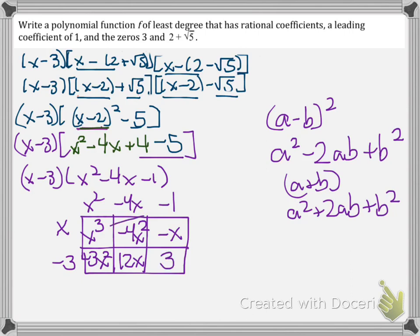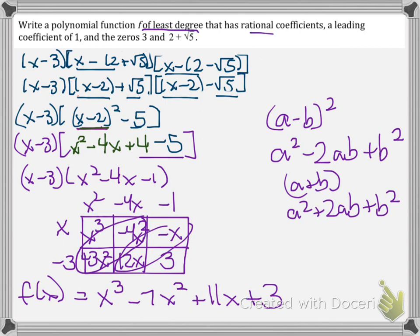And then we combine like terms here. We get x cubed minus 7x squared plus 11x plus 3. This is our function of least degree that has rational coefficients. There are no square roots in this polynomial. And the leading coefficient is 1.